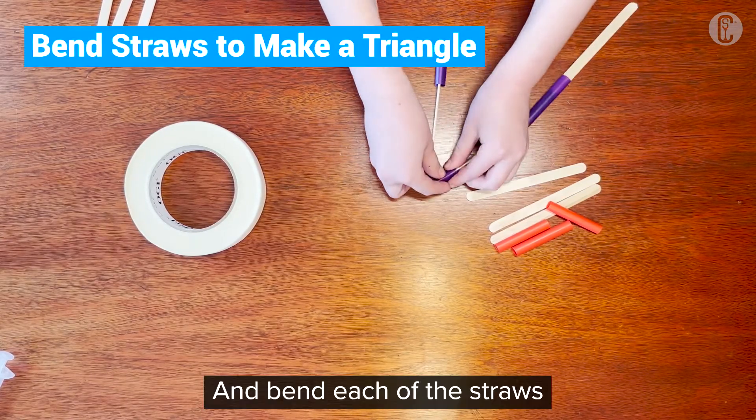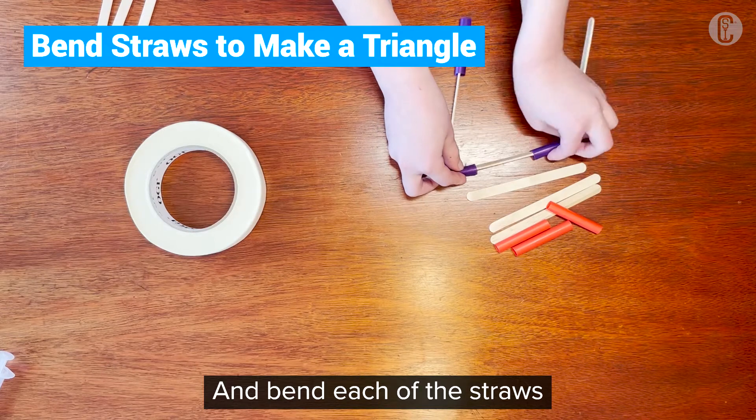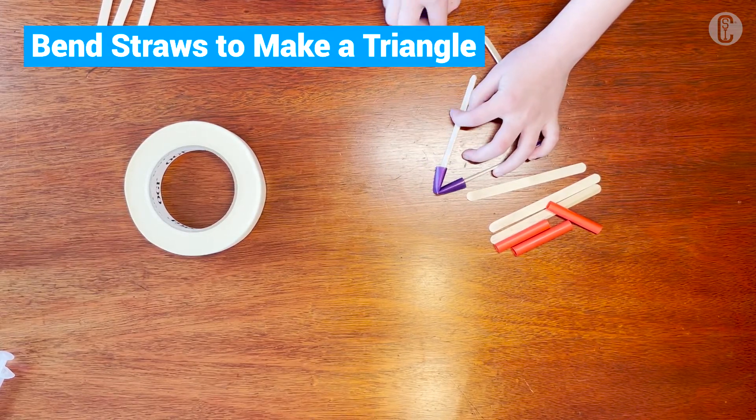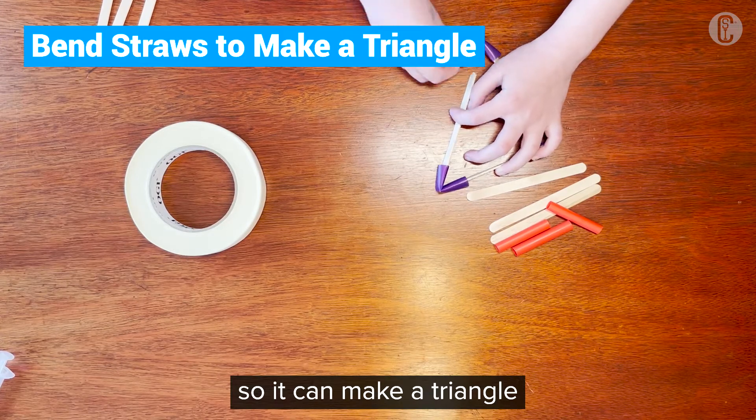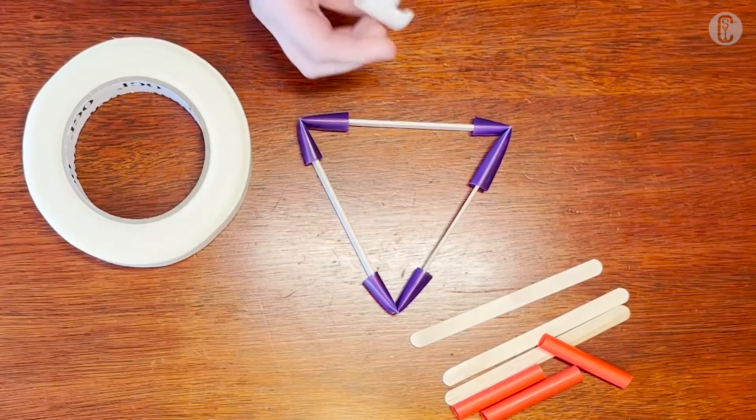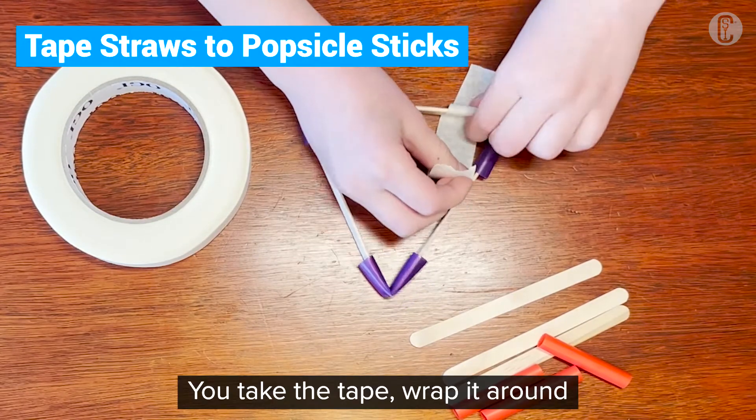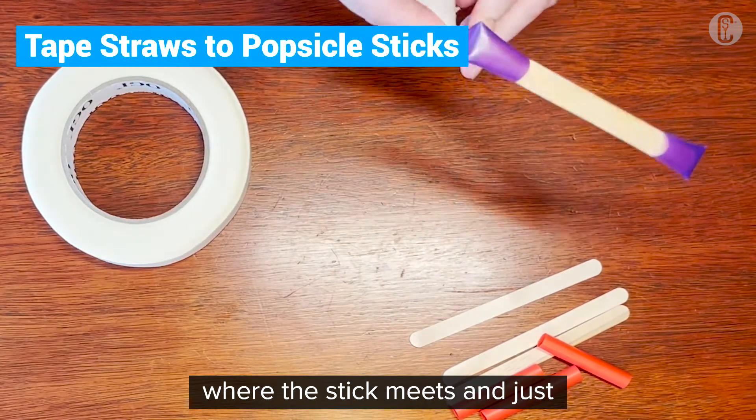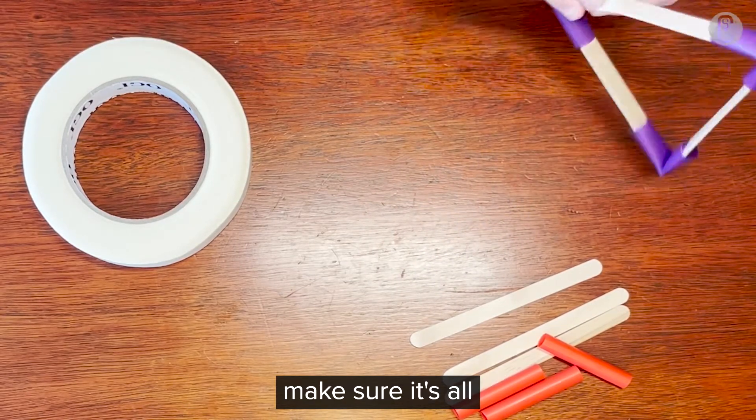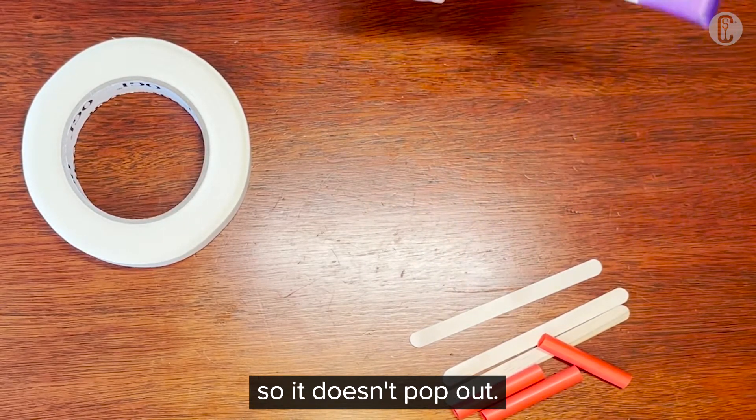And bend each of the straws so it can make a triangle like so. Then you take the tape, wrap it around where the stick meets, and just make sure it's all stuck to that so it doesn't pop out.